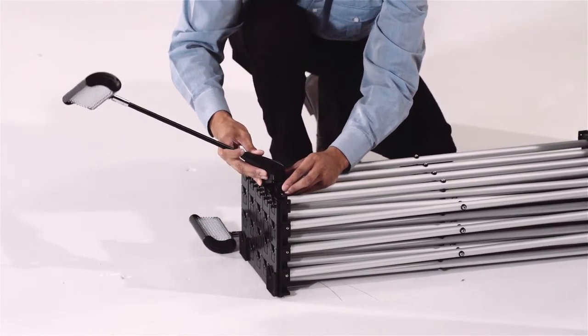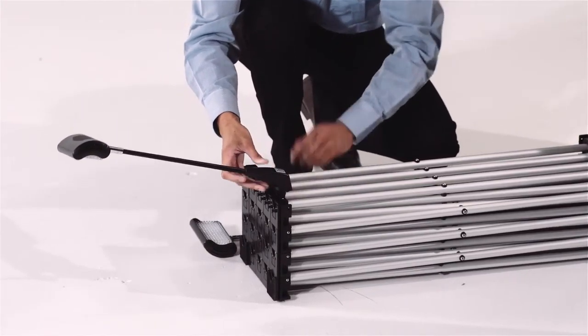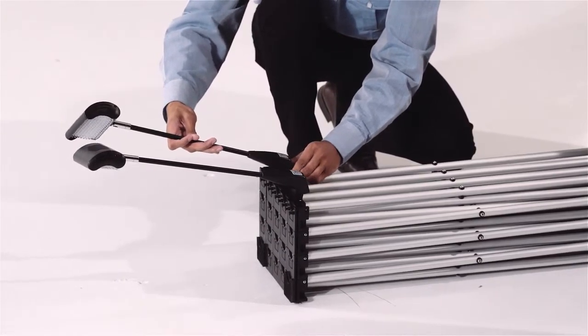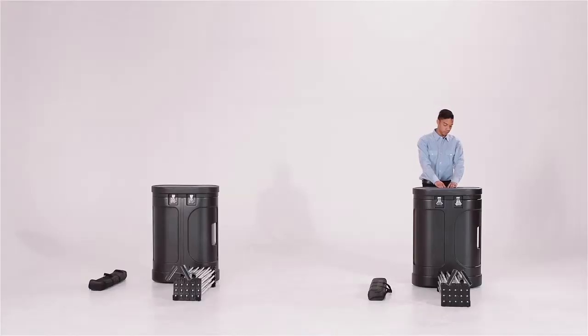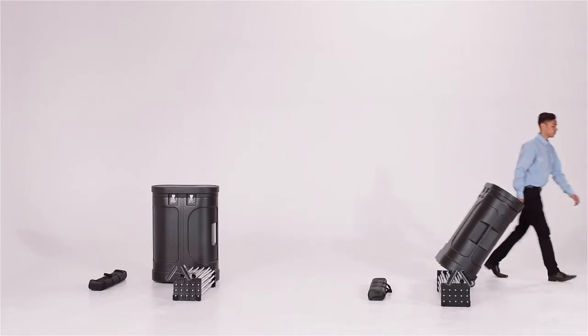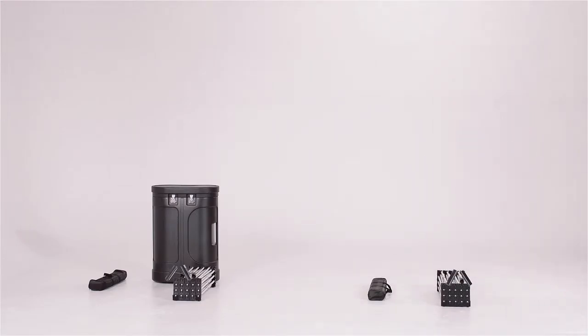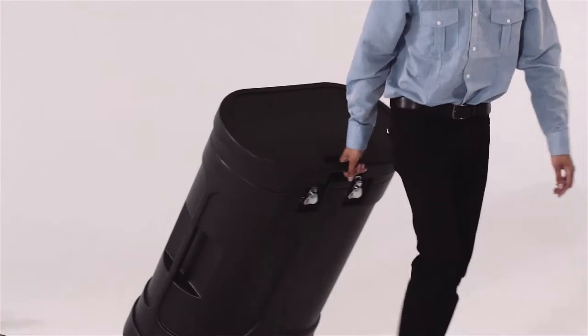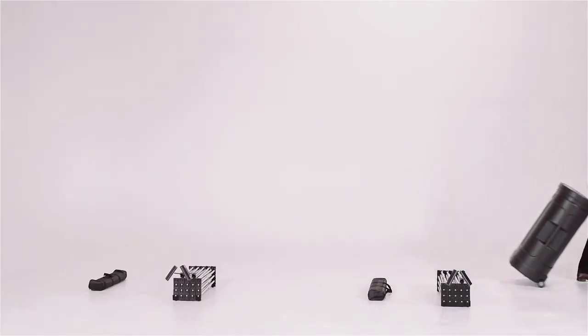Slide the lights onto the light brackets on the aluminum frame. Repeat these steps with the contents of the second case. We recommend putting all of the empty bags back in the cases for storage purposes and rolling out of the way for more space.